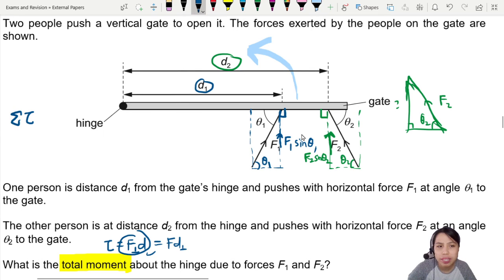So that will be equal to force times perpendicular distance. So F1 sine theta acting at this point, now I drew a dot there and that is d1, so that times d1.